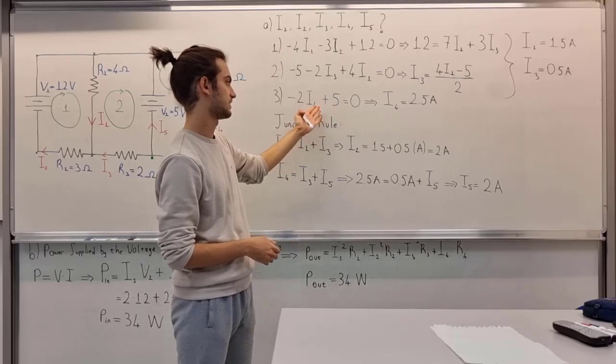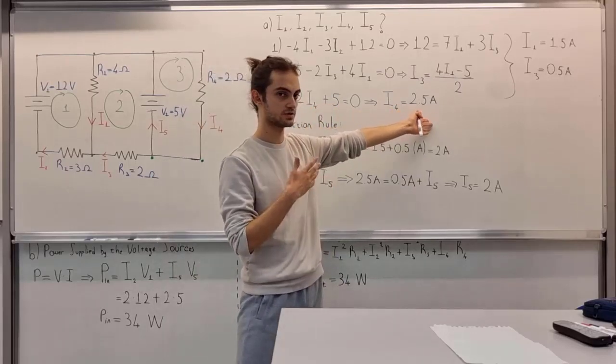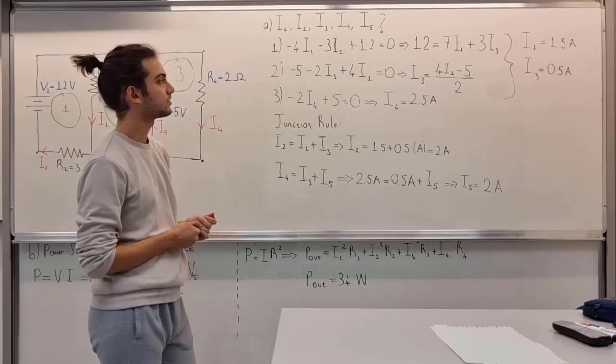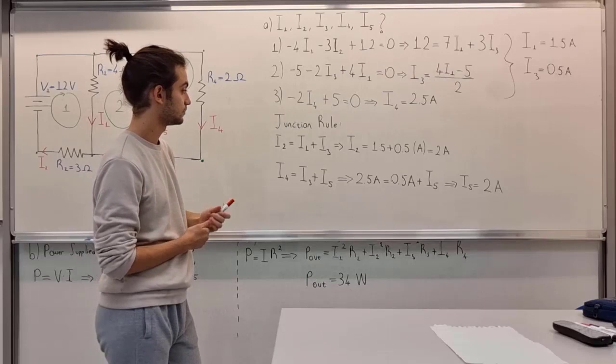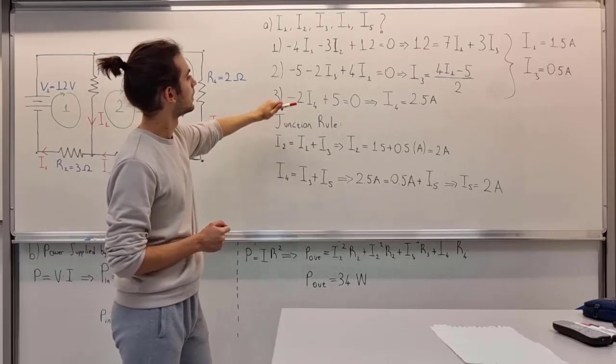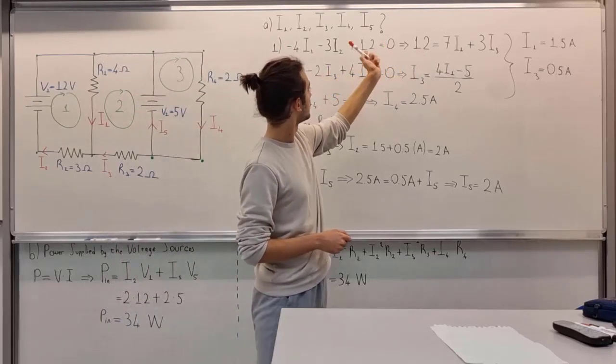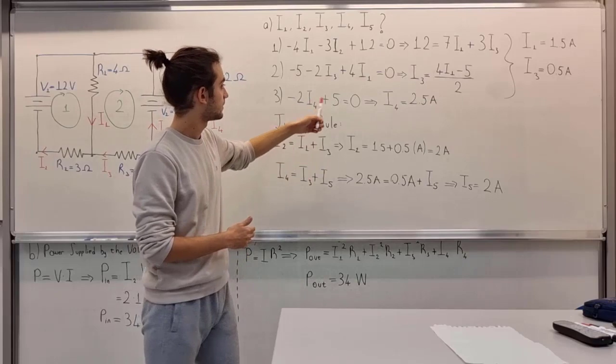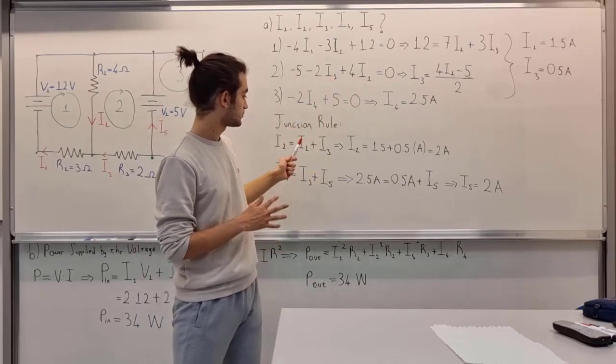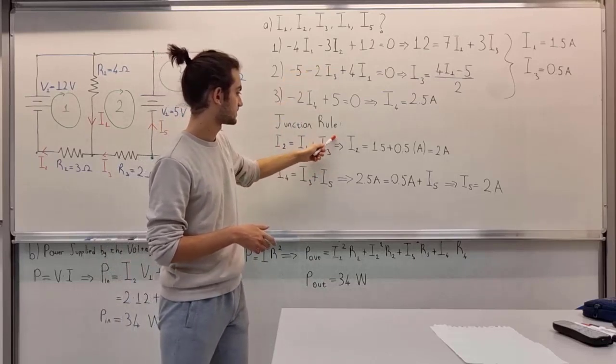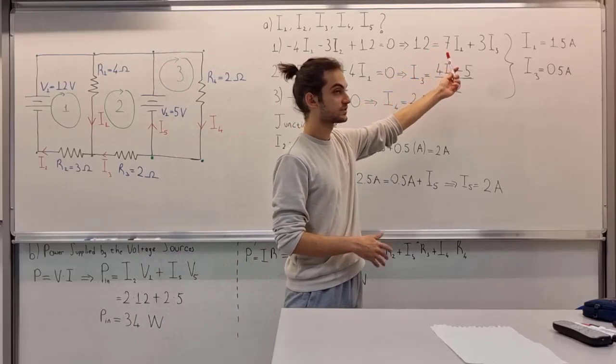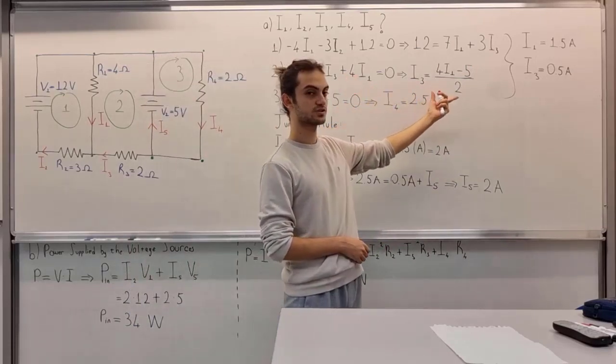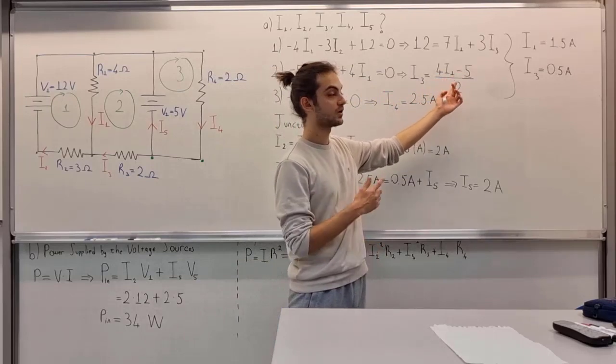As you can see from here, we have I4 pretty clearly - 2.5 amperes. Now the loop equations 1 and 2 are a bit complicated, but we have to utilize this one. We see that we have I2 here and I1 here. We know that I2 equals I1 plus I3, and we see that I1 and I3 are here. So I'm going to substitute I2 with this. Then we have 12 equals 7I1 plus 3I3. Then I'm going to write this in a more simple fashion: I3 equals 5I1 minus 4I1 minus 5.